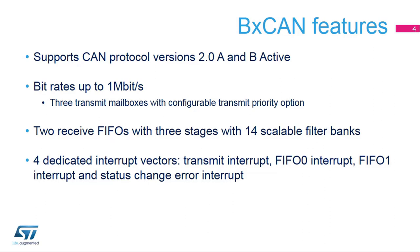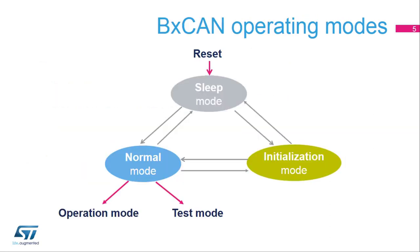The BX CAN peripheral also manages four dedicated interrupt vectors. The BX CAN has three main operating modes: initialization, normal, and sleep. After a hardware reset, the BX CAN is in sleep mode, which operates at lower power. Note that in sleep mode, the internal pull-up is active on pin CAN TX.